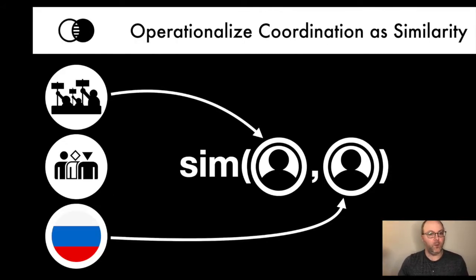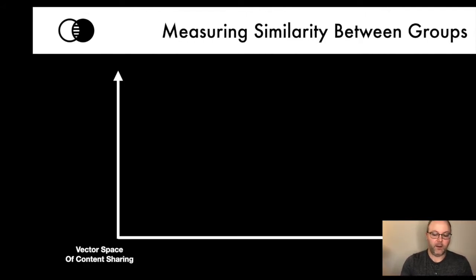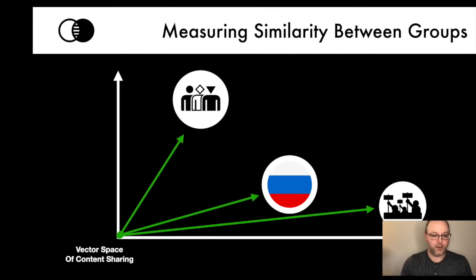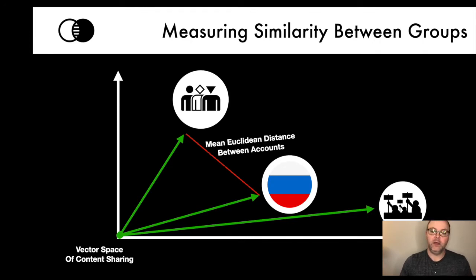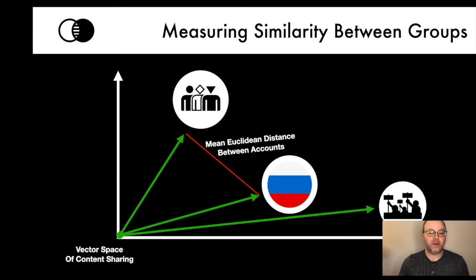We operationalize online coordination by looking at the similarity of accounts within these different groups. By aggregating account-level behaviors to these groups and then evaluating similarity between them, we construct metrics to identify how similar these behaviors really are. We do this by projecting accounts into a vector space based on the images, text, or links they share, then creating pairs of accounts and evaluating the Euclidean distance between them. Robustness checks confirm results are not dependent on the distance metric.